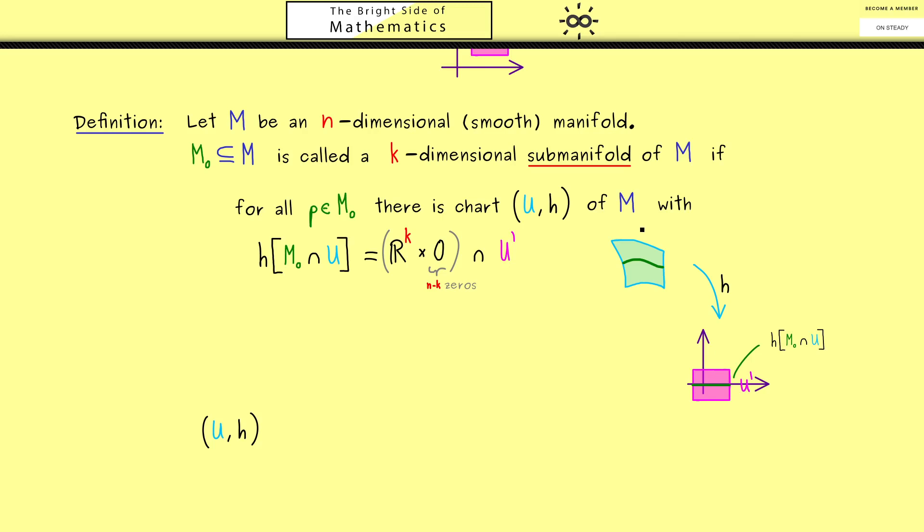Then in this case, we can call the original chart of M a submanifold chart for M_0. So there you should see the difference: this chart is not only defined on M_0 but also around it. Indeed, this is the essence of a submanifold. There is something around it; you can leave the submanifold.